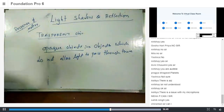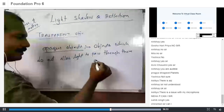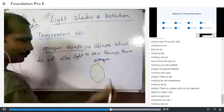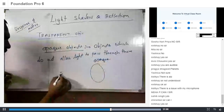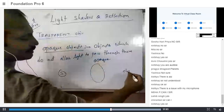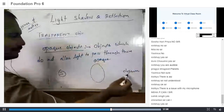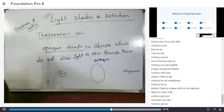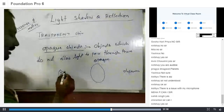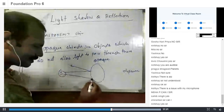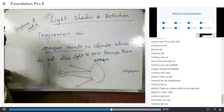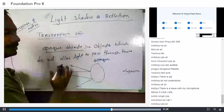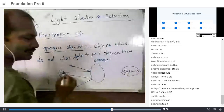Teacher sets up a diagram: 'So if I have an opaque object, I have a source of light here and I have an observer here. Now, is the source visible to the observer?' Students respond: 'No, sir.' Teacher explains: 'Because the light from the source is reflected back from the opaque object, so the observer cannot see the source.'